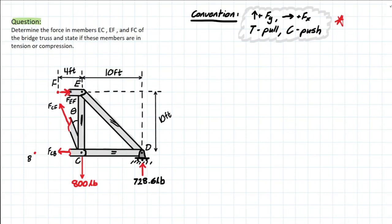So, that means no moment would actually be produced by CB or CF. So, we can actually solve for EF here using moment at C. So, let's start there.